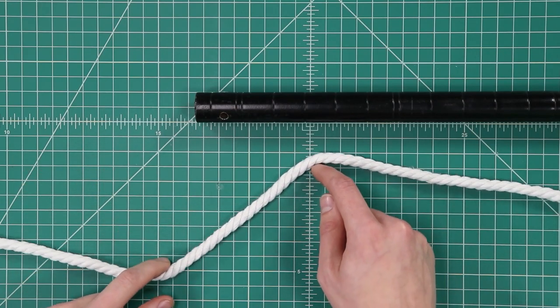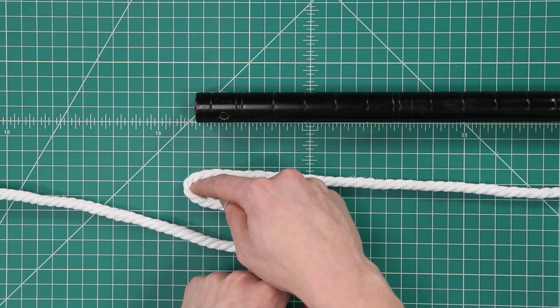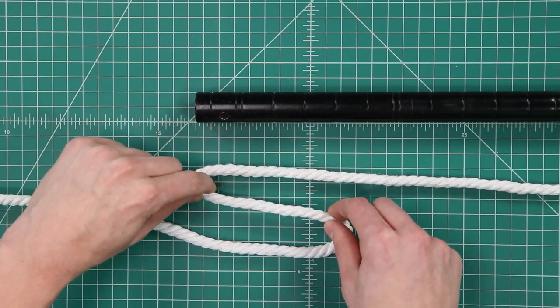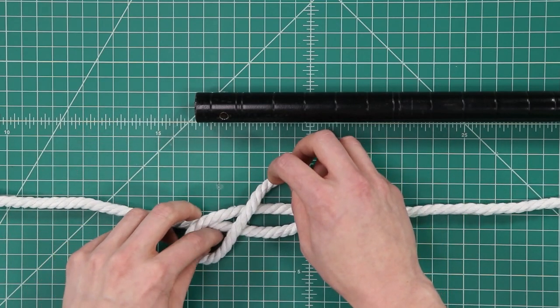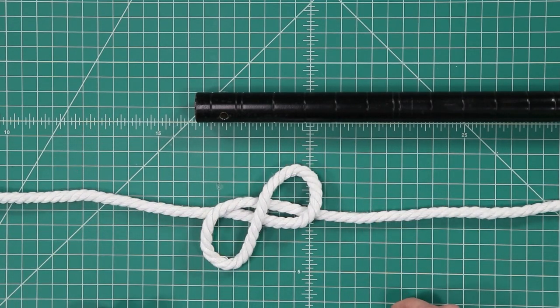We'll begin by making an S, by twisting our cord around like this, and we'll keep on twisting until the cord loops over itself, making this figure eight shape.